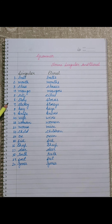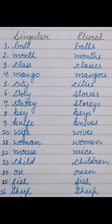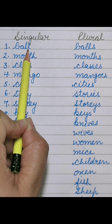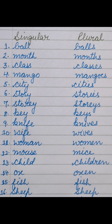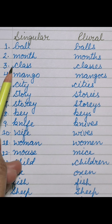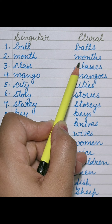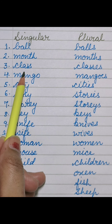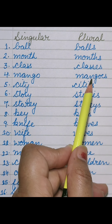Let us do some singular and plural word examples. First word: ball — singular noun, name of a thing. Plural is balls — more than one ball. Second: month — singular, months — plural. Third: class — singular, classes — plural. Next: mango — singular, mangoes — plural.